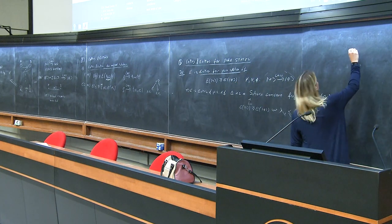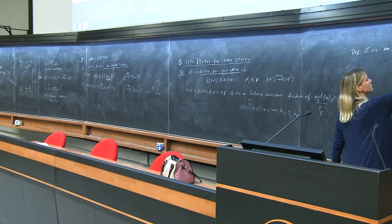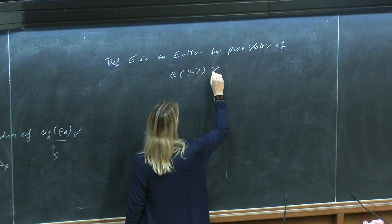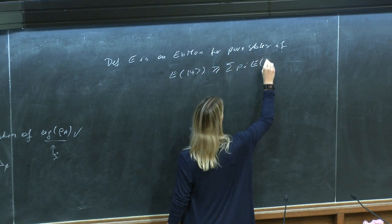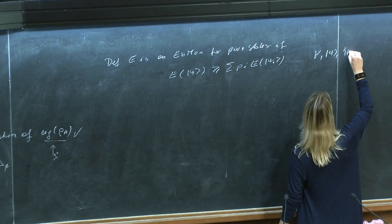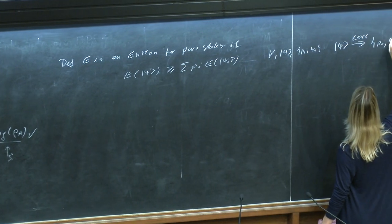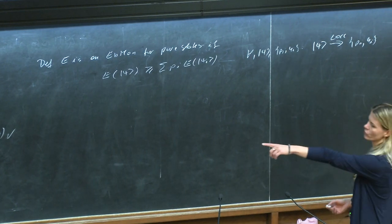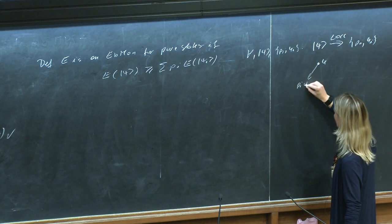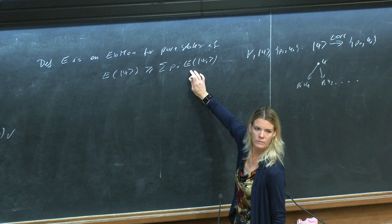What about entanglement monotones? E is an entanglement monotone for pure states if E(psi) ≥ sum_i p_i E(psi_i), and this is for pure states only. This has to hold for all psi and ensembles {p_i, psi_i} such that psi can be transformed by LOCC into this ensemble. It's just the same as what we had for mixed states, now for pure states. I start with my state psi, do some measurement, get with probability p_1 the state psi_1, with probability p_2 the state psi_2, and so on. I check whether on average the entanglement is not increased.